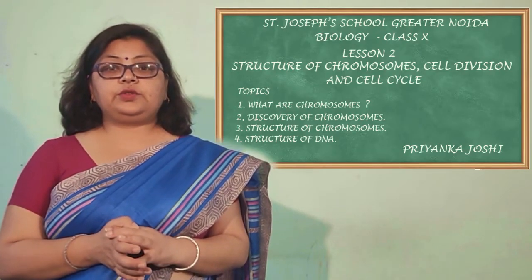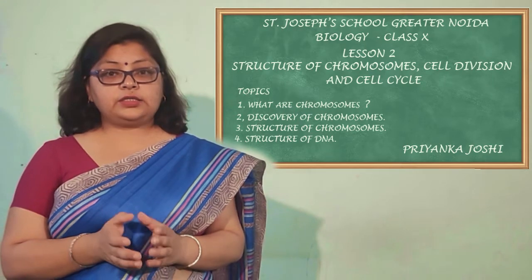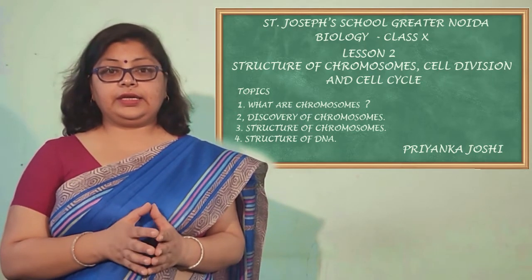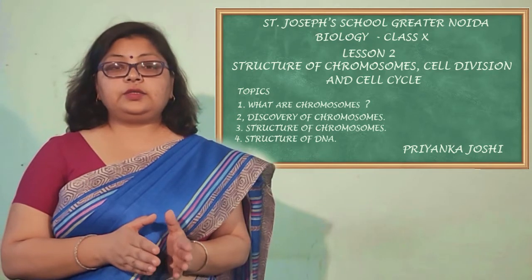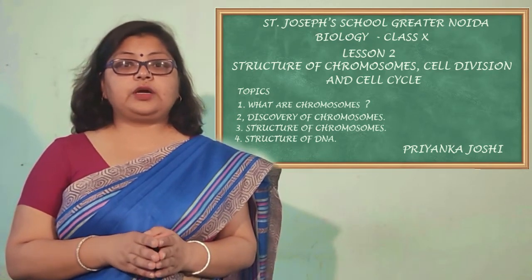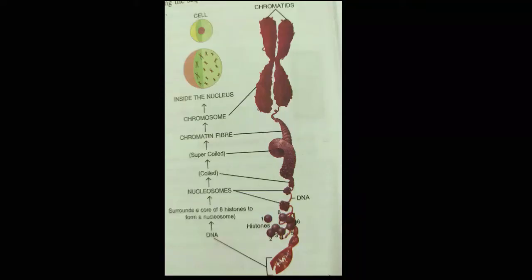The chromatin fiber is made of two components: histones and DNA. DNA is 40 percent whereas histones — which are proteins — are 60 percent. The DNA strand winds around a core of eight histone molecules. This core can be imagined like a football around which a long rope is wound with one or two loops. Each such complex is known as a nucleosome.